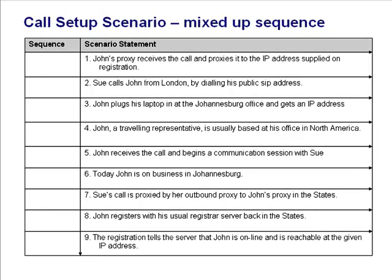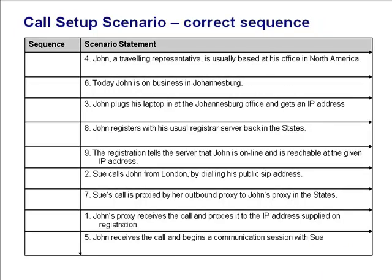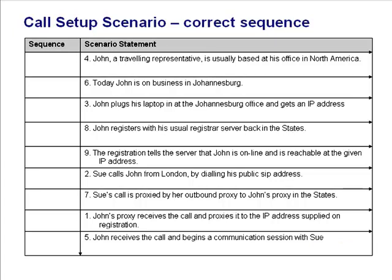To get started on the next topic, take a look at this set of statements describing a typical call setup — the sequence of steps has been jumbled up. Take a moment to read through these steps and note the correct sequence. Here's how I think they should be sequenced — take a look and see how our sequences compare. What's interesting here is not so much the logical sequencing, but the fact that through SIP registration and location, it doesn't really matter where we're physically located. As long as we can get an accessible IP address, no matter where we're located in the world, we can receive calls addressed to our public SIP address.